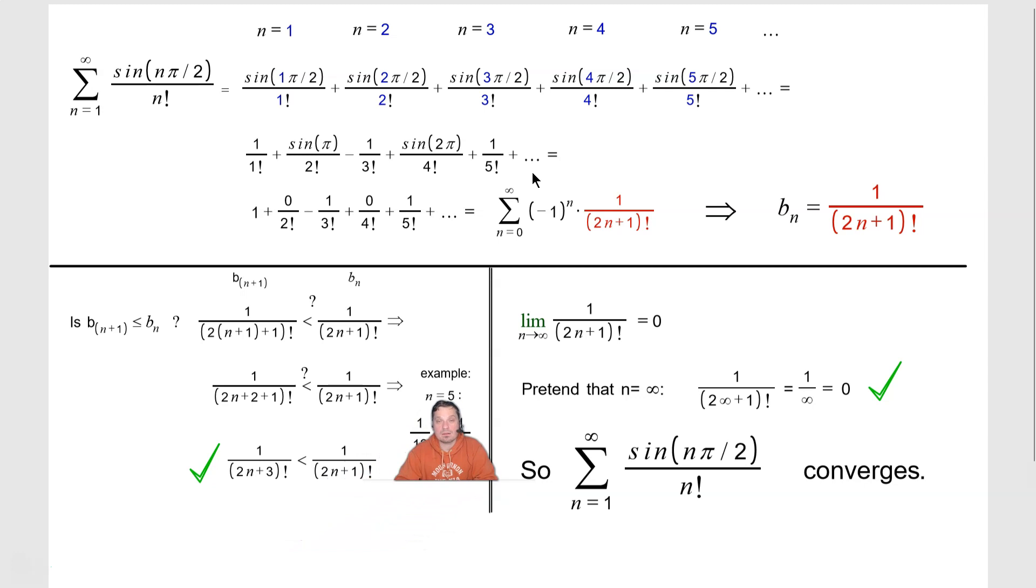So for example, like imagine n has the value 5. So you're going to plug n equals 5 in. So this would be 2n plus 3, that would be, in other words, 2 times 5 which is 10, 10 plus 3 is 13. So it would be 1 thirteenth.